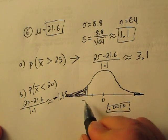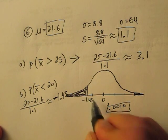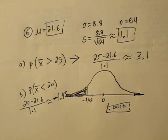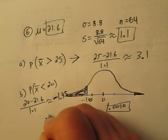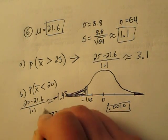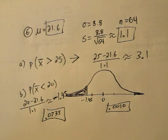So a z-score of negative 1.45. Looking that up on the table, we get 0.0735. That's the answer to part b.